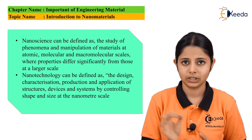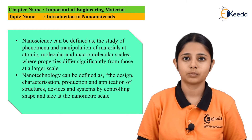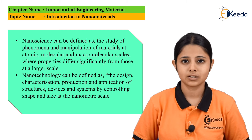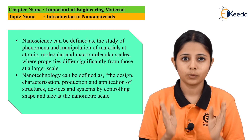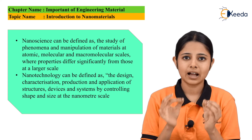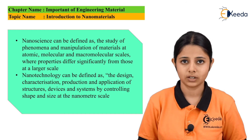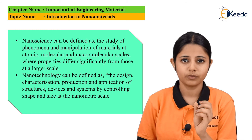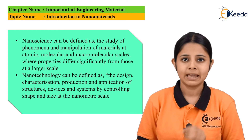Nanomaterials are extremely small materials — they are one millionth of a meter, that means 10 raised to minus 9 meters is a nanometer. For example, a nanometer can be represented by six carbon atoms in a straight line or ten hydrogen atoms in a straight line.